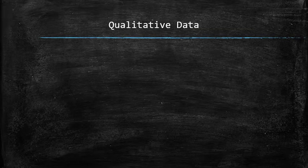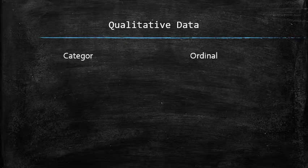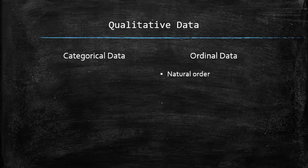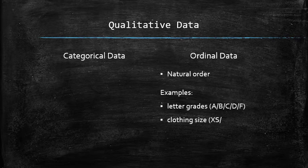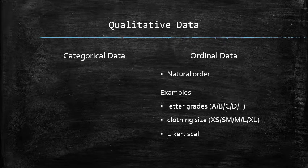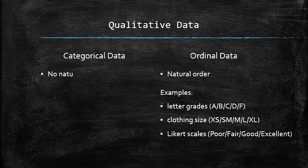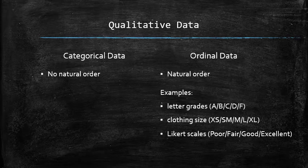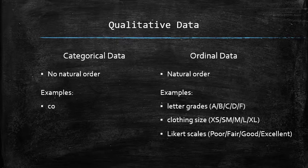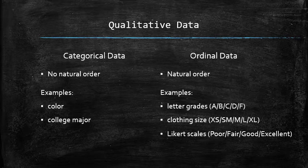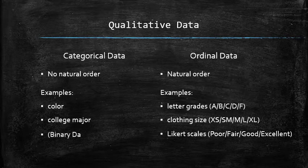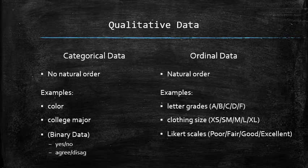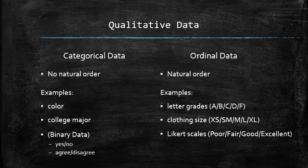Qualitative data can be further classified as categorical or ordinal. Ordinal data have a natural ordering such as letter grades, clothing size, or likert scale. Qualitative data without a natural order is called categorical, for example, colors or college majors. There is also a special type of categorical data called binary, when there are only two possible answers to a question such as yes-no or agree-disagree.